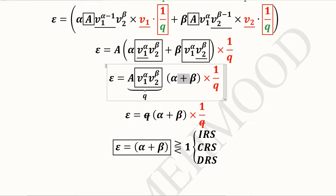And alpha plus beta will remain as it is. So alpha plus beta will be the answer for the elasticity of scale. It depends upon the sum of alpha and beta, the output elasticities with respect to V1 and V2. If the sum is equal to 1, it will be constant returns to scale. If it is greater than 1, it will be increasing returns to scale. And if it is less than 1, it will be decreasing returns to scale.